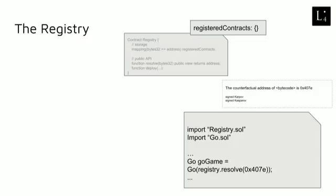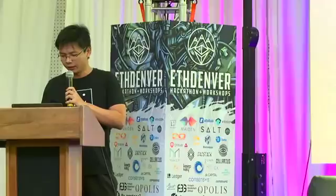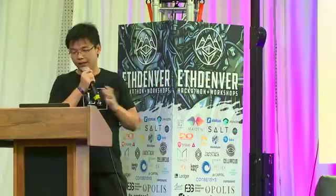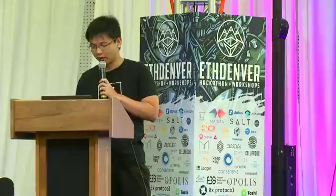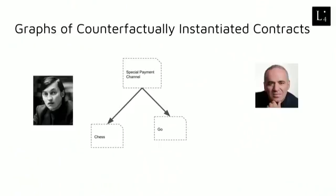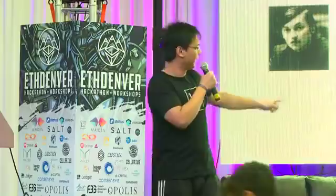There's one more thing — the third-party contract I've been talking about can itself be a counterfactually instantiated contract. What we get from this is that we can construct a big graph of counterfactually instantiated contracts. In the specific example of the state channel between Kasparov and Karpov, one way we might do it is to have a chess counterfactually instantiated contract, a Go counterfactually instantiated contract, and a special payment channel that uses counterfactual addressing to look at both of them.